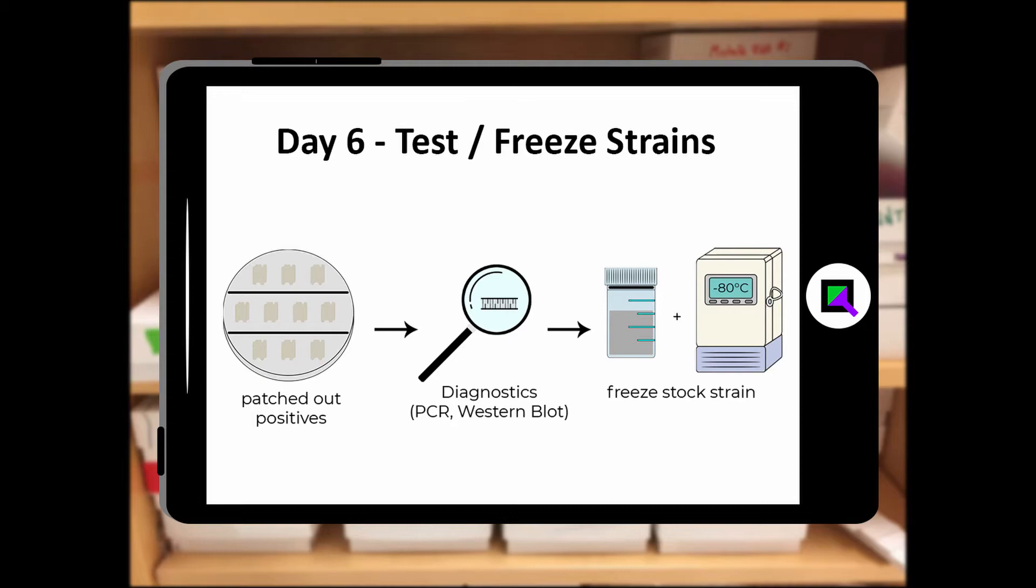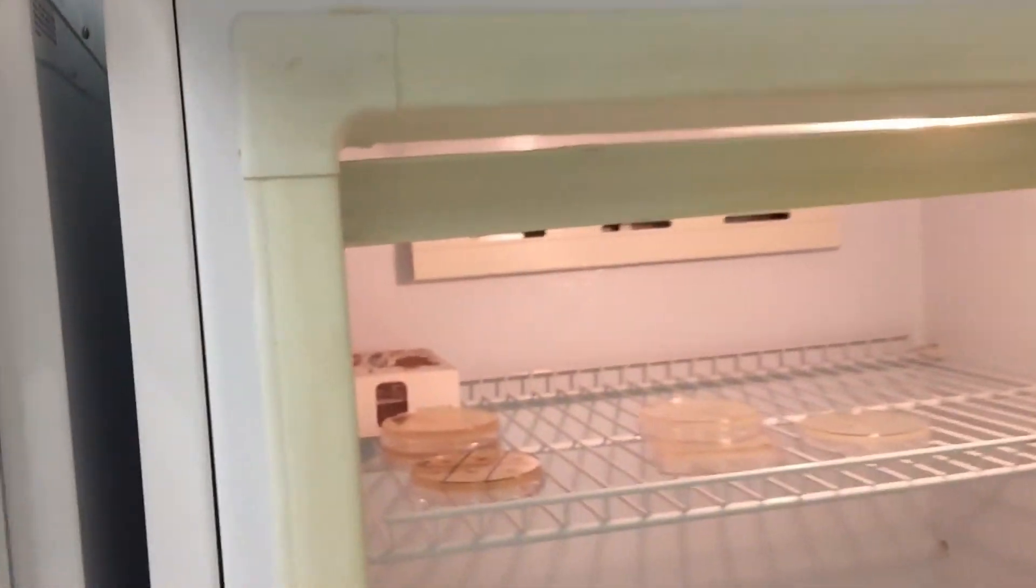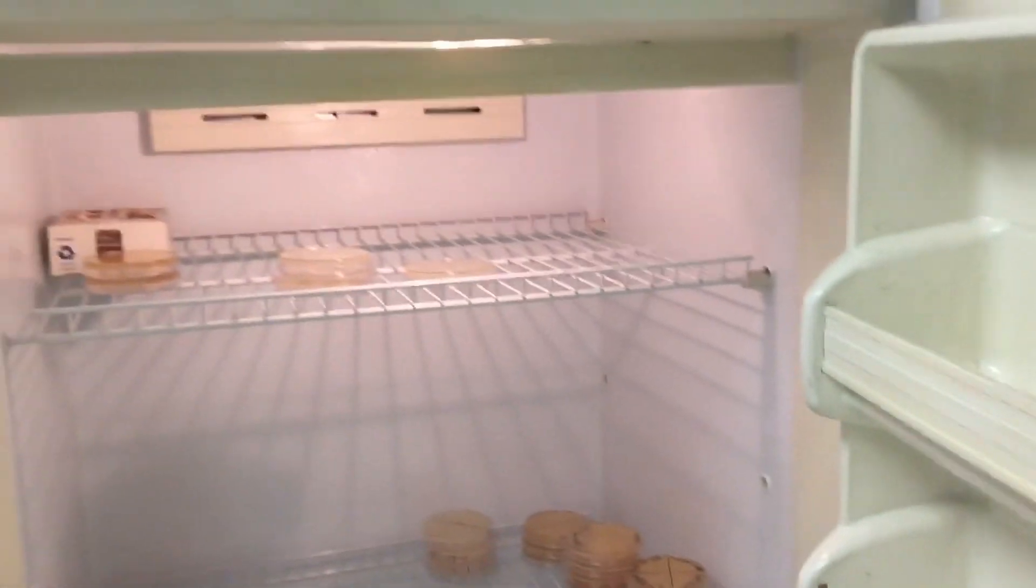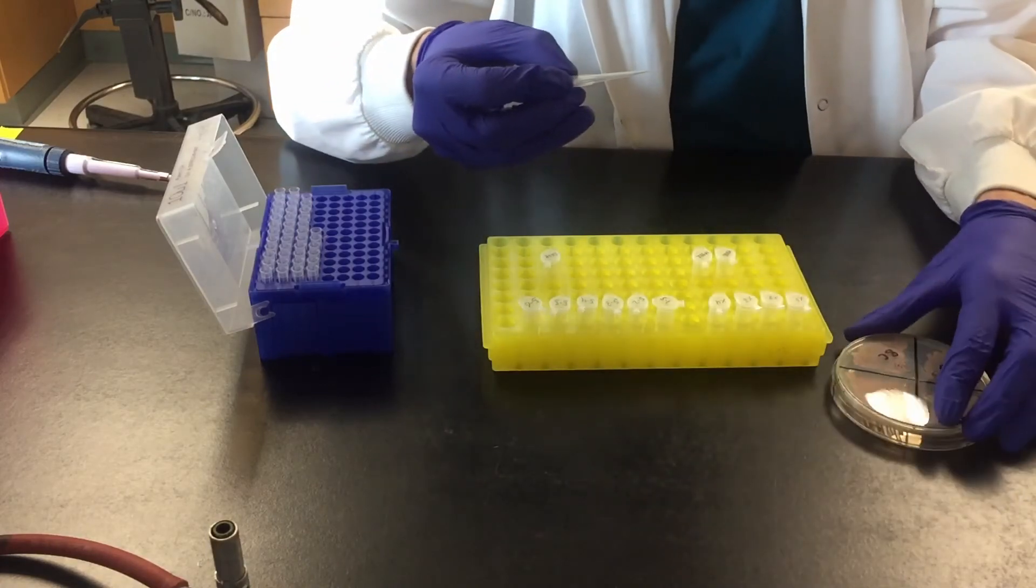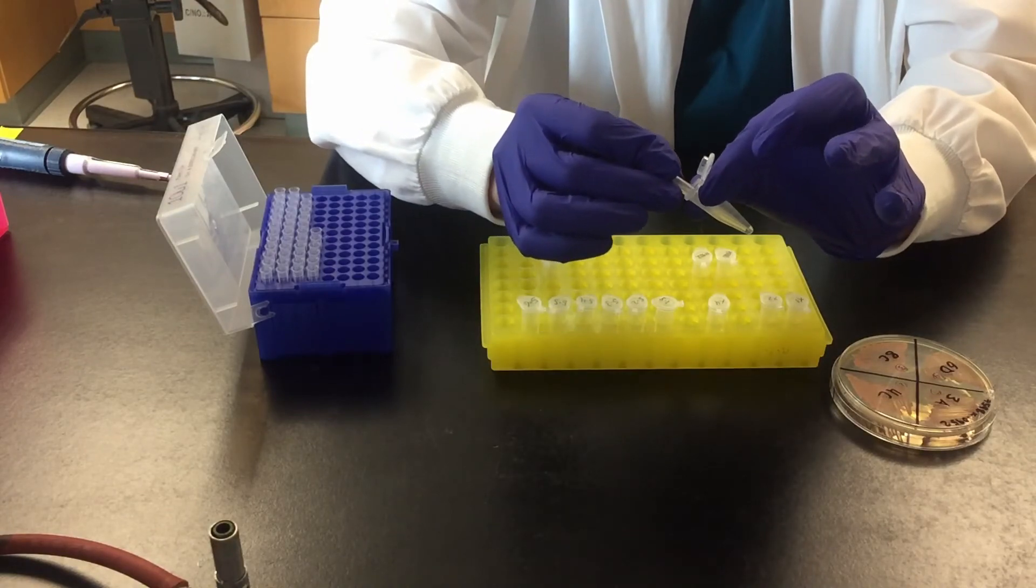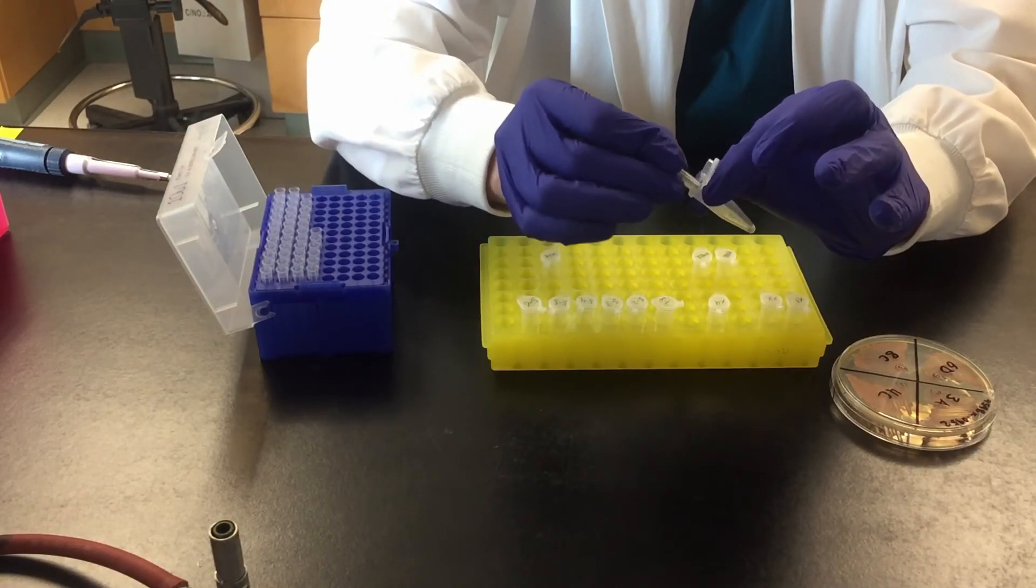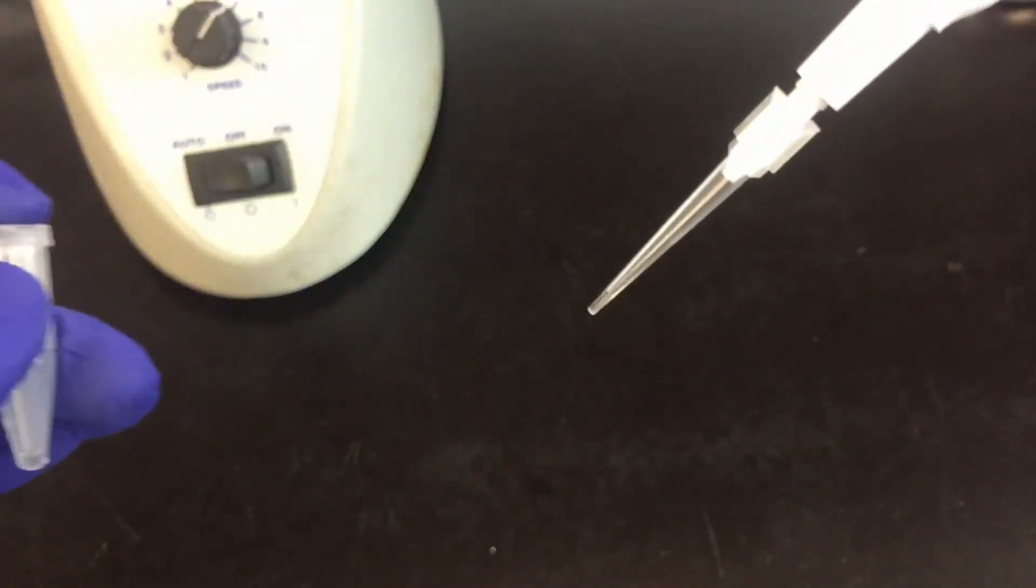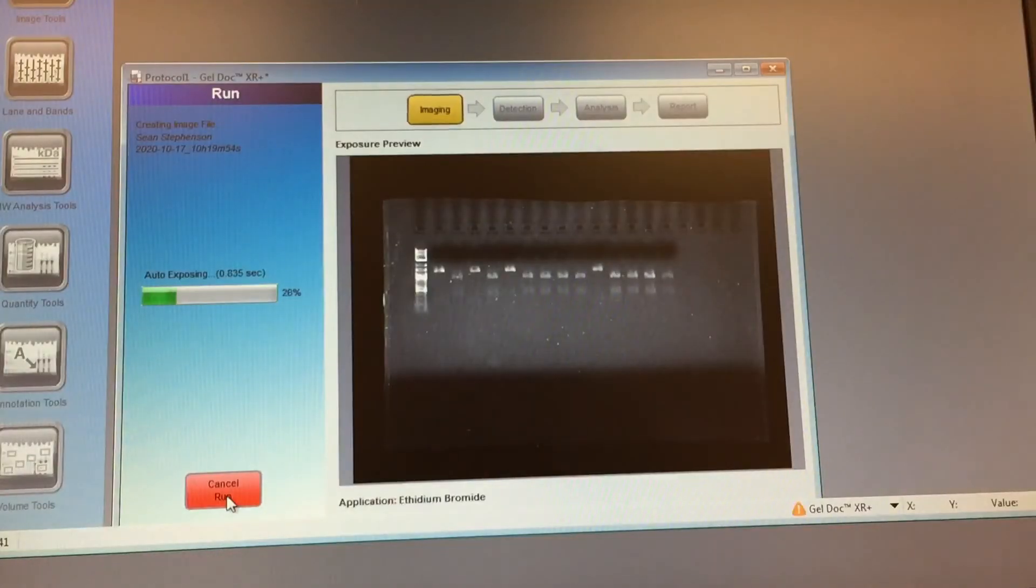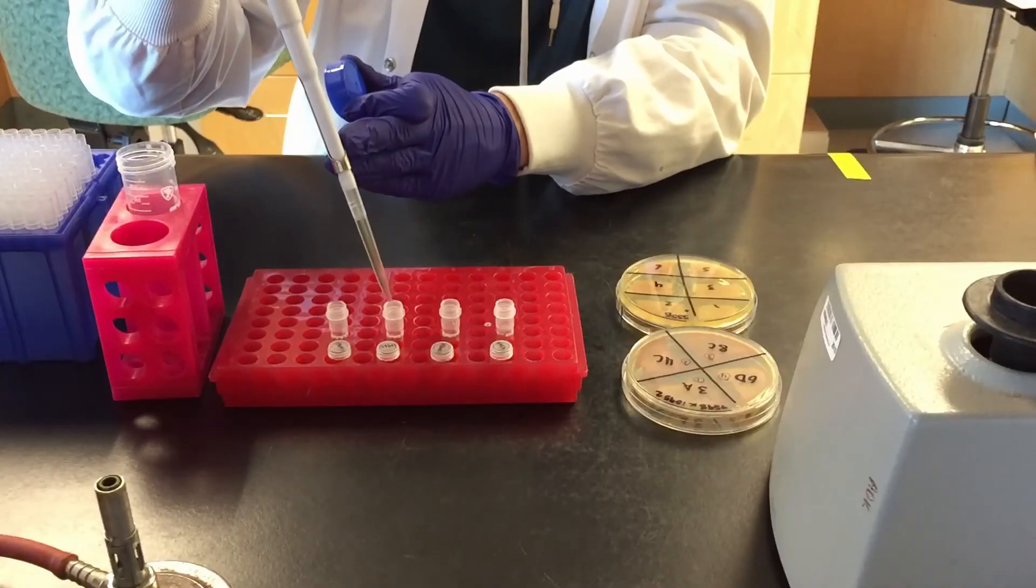Day six, freezing and testing the strains. After a day or two, the patches should be grown and ready to test. Any false positive colonies will not form a healthy patch. A small amount of cells go through the crude genomic prep. A tiny amount of DNA gets tested by PCR. After screening for confirmed positive strains, they are frozen.